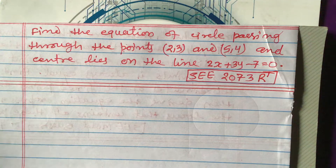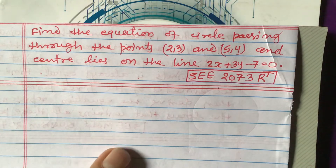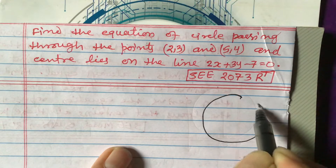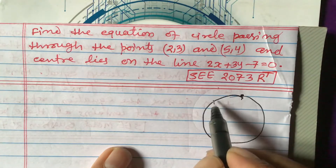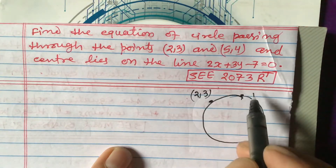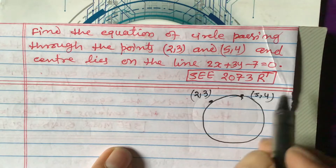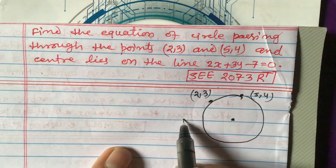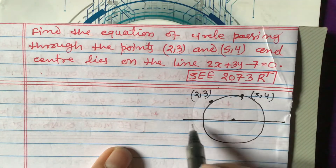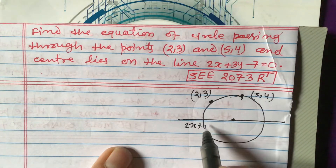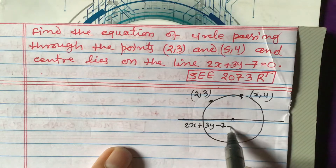If I draw this question, it will be like this. One circle is given like this — the circle passes through the points (2,3) and (5,4), as given. We have also been given that the center of the circle lies on the line 2x + 3y - 7 = 0, as shown here.